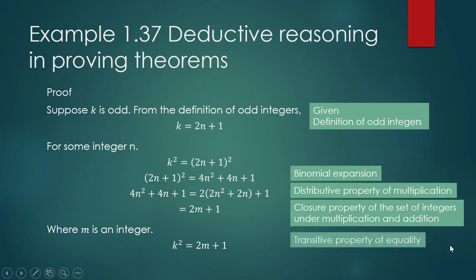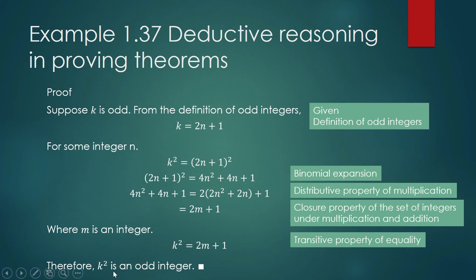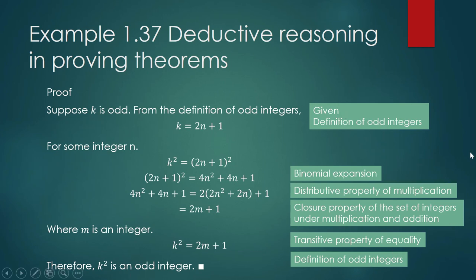Writing k squared equals 2m + 1 is justified by the transitive property of equality — we followed a sequence of equations. Therefore, k squared is an odd integer, because this matches the definition of an odd integer.